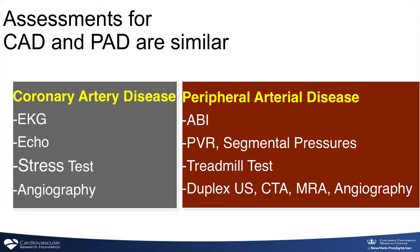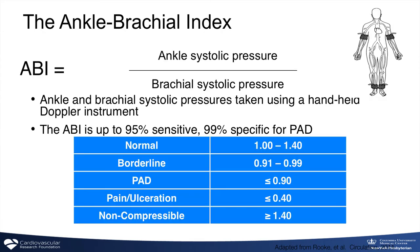We evaluate these patients using the ankle brachial index — the ABI — which is the EKG of the legs, the most simple and effective screening tool. We measure blood pressures in both arms and both feet using Doppler ultrasound, then take a ratio of the higher ankle pressure over the higher arm pressure. The pressures in the legs are usually equal or higher than in the arms; if lower, that's abnormal and usually a sign of PAD.